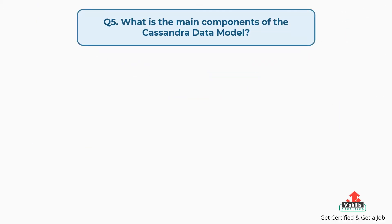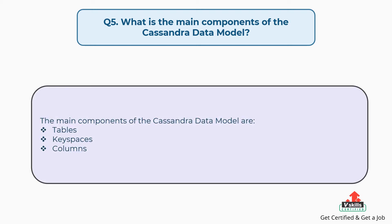Question number five: What are the main components of the Cassandra data model? The main components of the Cassandra data model are tables, keyspaces, and columns.